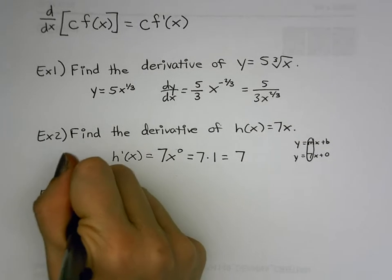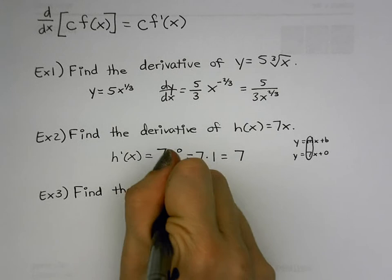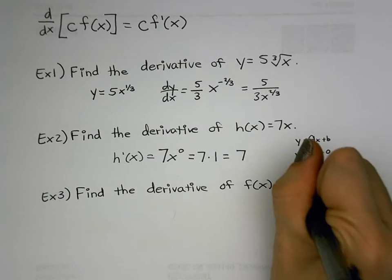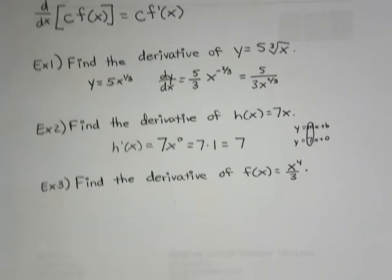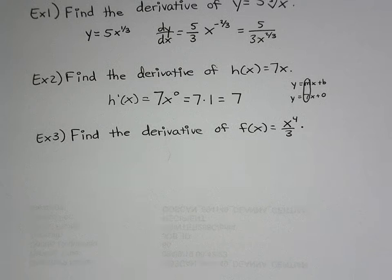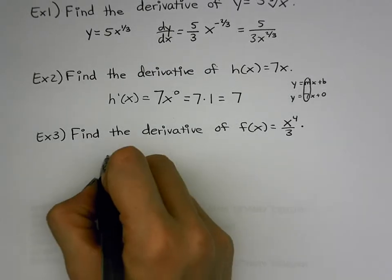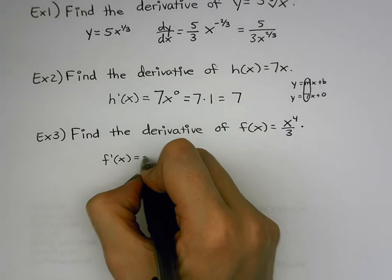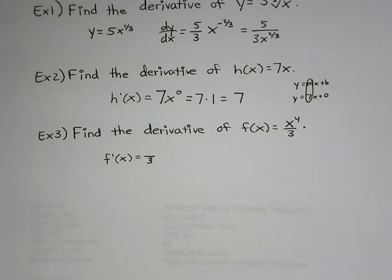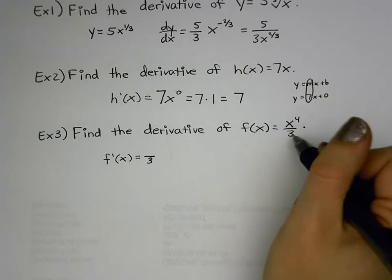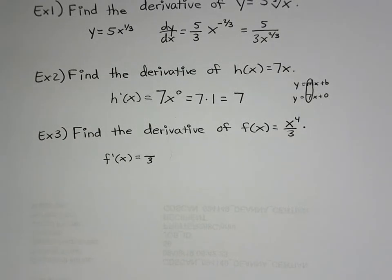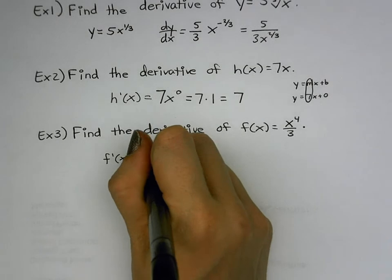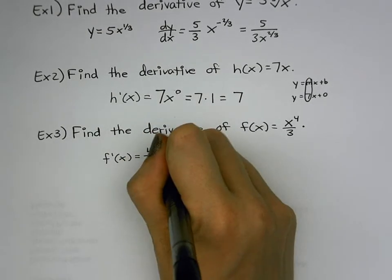Example three: find the derivative of f(x) = x⁴/3. This uses the constant multiple rule because the constant is actually one-third — the three in the denominator is a coefficient, not its own function. So one-third just hangs out. Apply power rule on x⁴: bring down the four, leave the base alone, subtract one from the exponent. That gives (1/3)(4x³) = (4/3)x³.